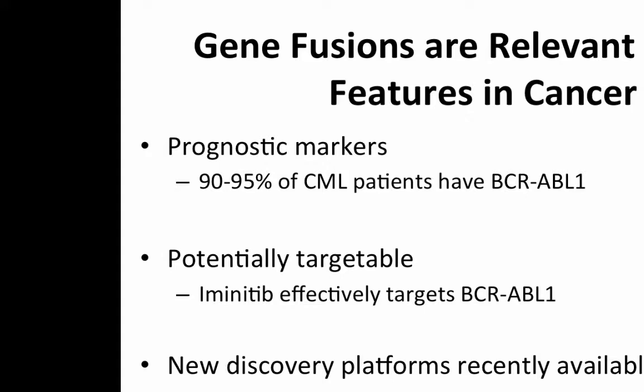Gene fusions are relevant clinical features in cancer — they're prognostic markers, with BCR-ABL1 as our canonical example. They're targetable: we have imatinib that targets BCR-ABL1. There's been a lot of excitement recently in discovering new gene fusions, spurred by the discovery about five or six years ago of TMPRSS2-ERG fusions in prostate cancer. Fusions were before then thought to only drive leukemias and sarcomas, but then they were discovered in solid tumors, creating hope that gene fusions in common solid tumors could also be targeted.